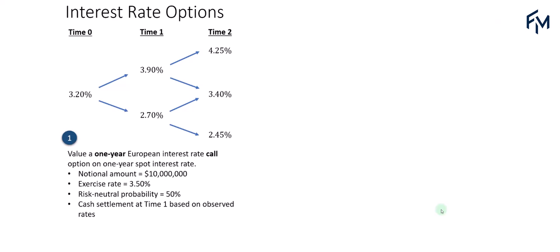In this video, I am going to run through four examples on valuing interest rate options using the binomial option valuation model. For example one, we are going to value a one-year European-style interest rate call option. In example two, a one-year European interest rate put option. In example three, a two-year European interest rate call option, and in example four, a two-year European interest rate put option. We will have a two-period binomial interest rate tree, and the risk-neutral probability will be 50% for each node.